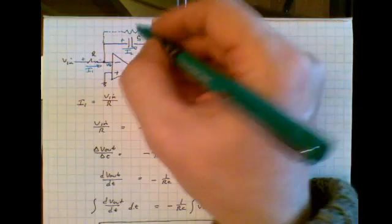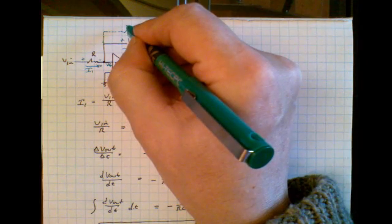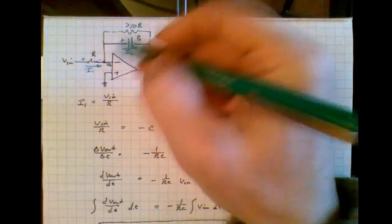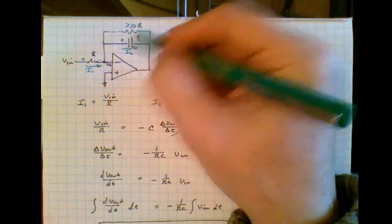So this resistor over here should be greater than 10 times this resistor over here.